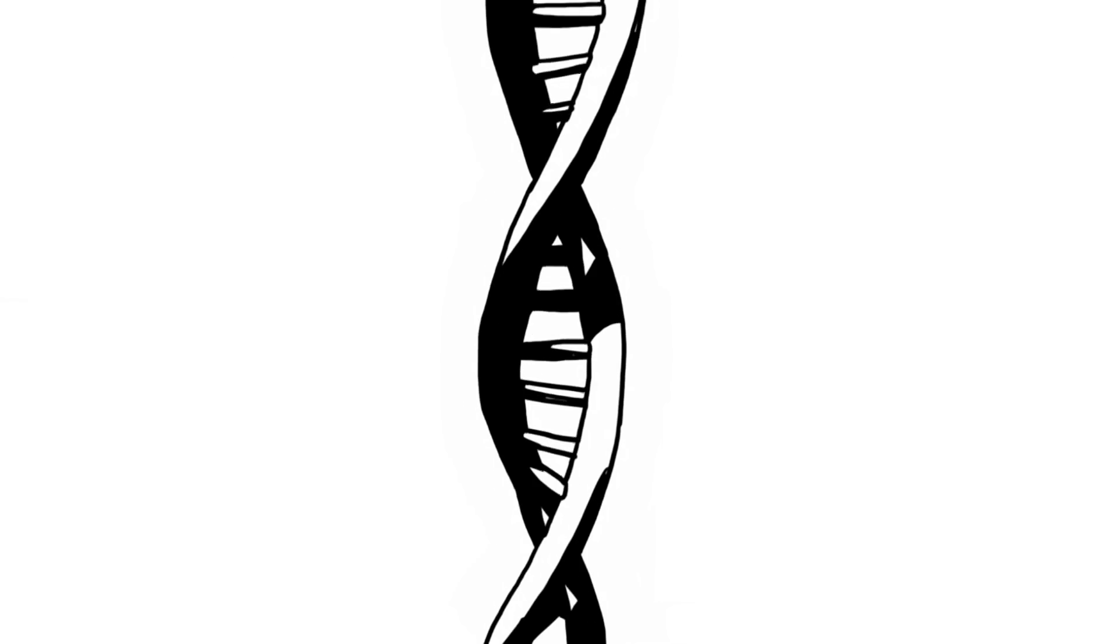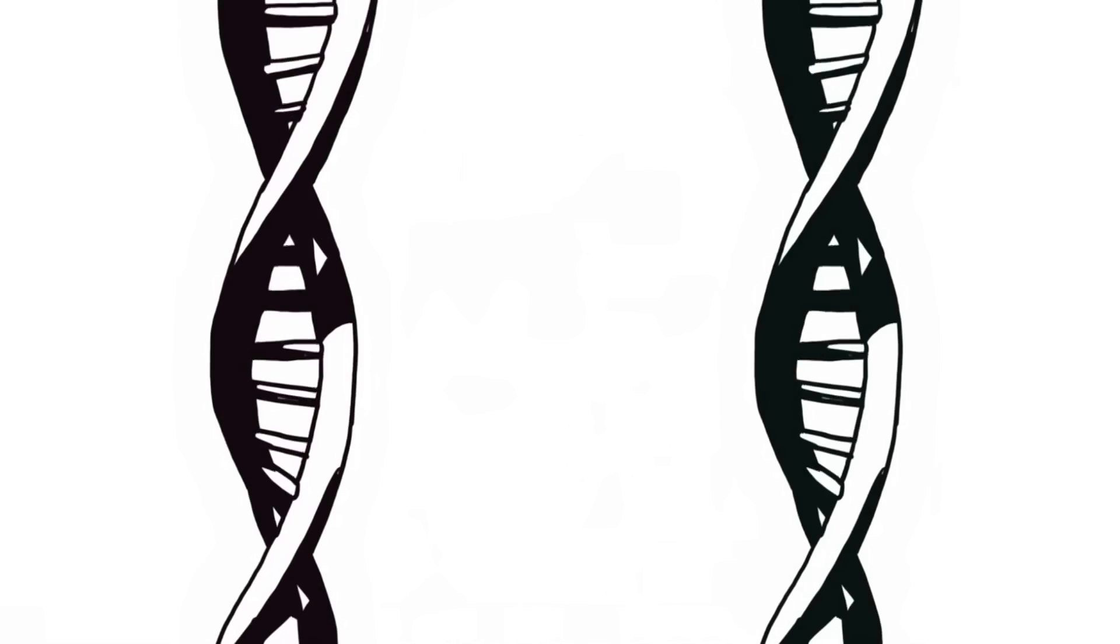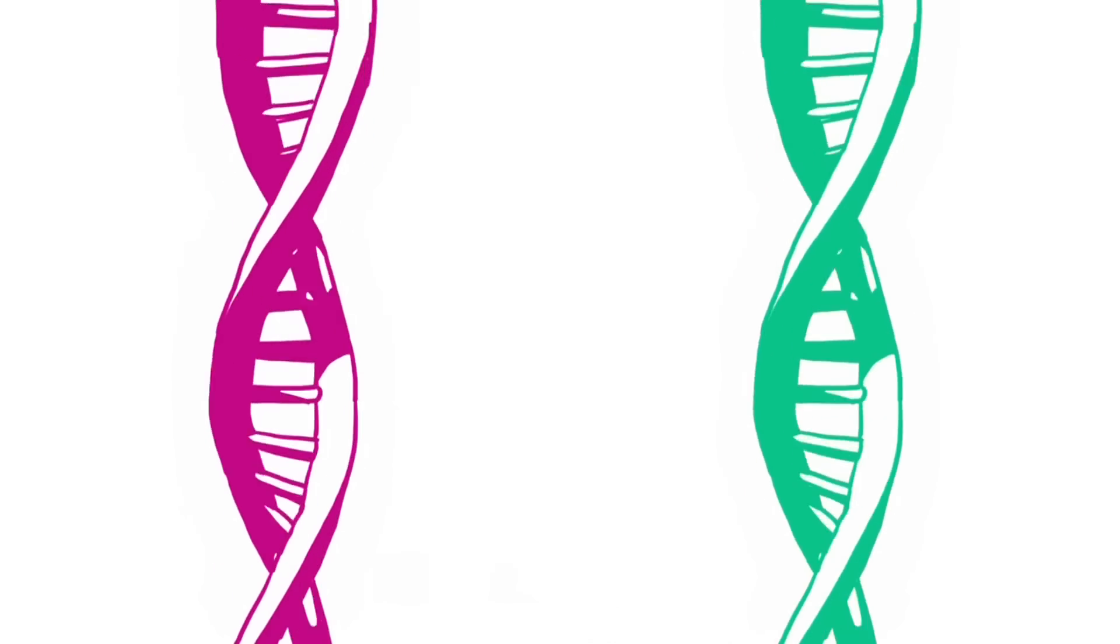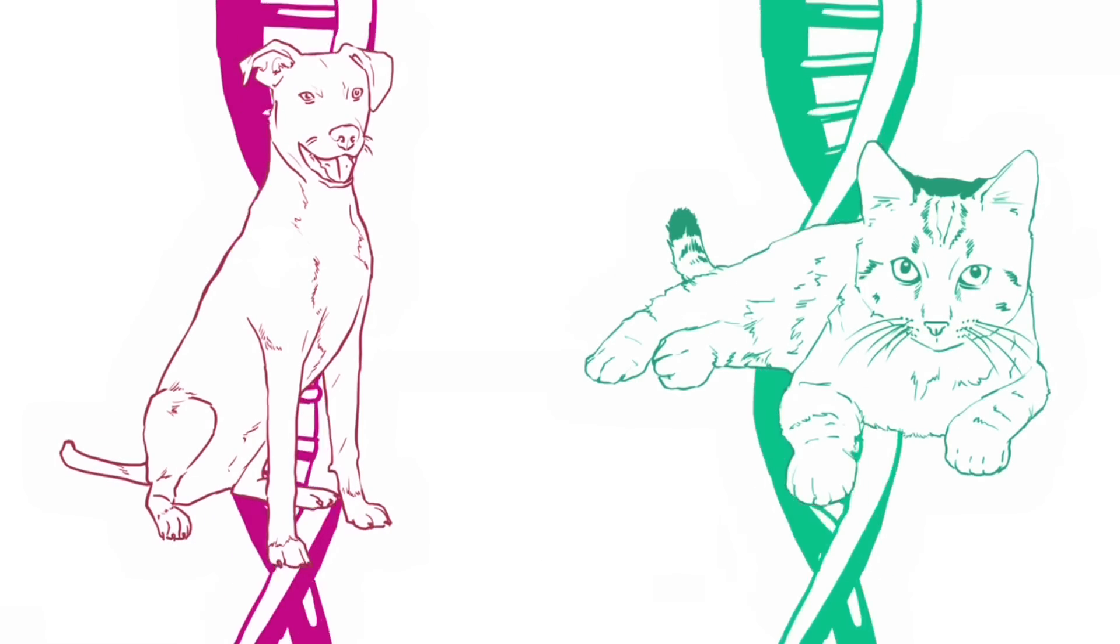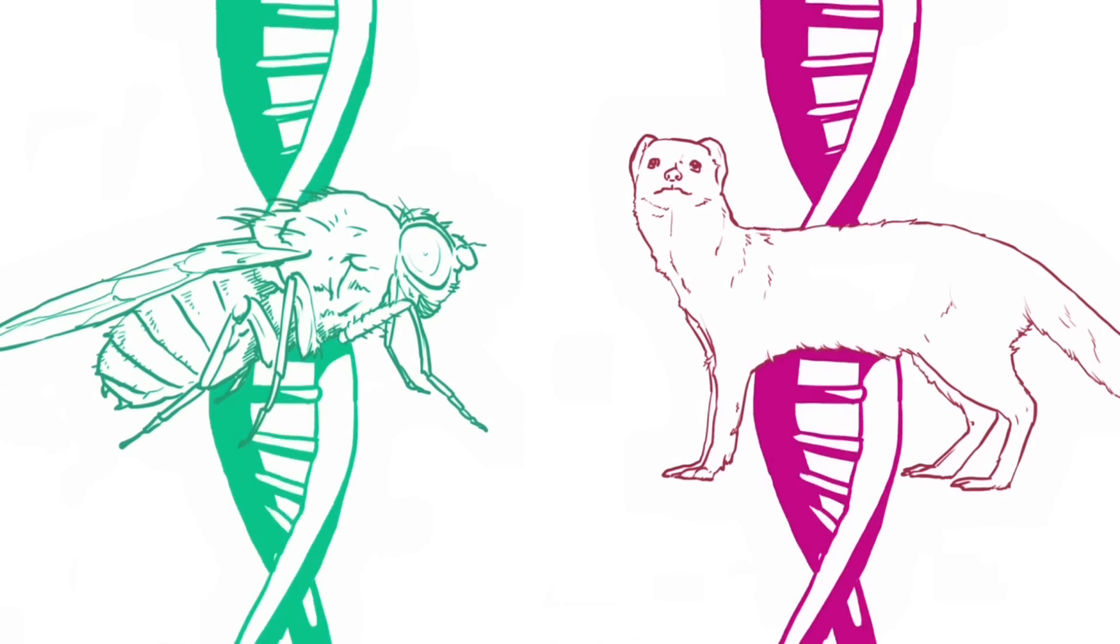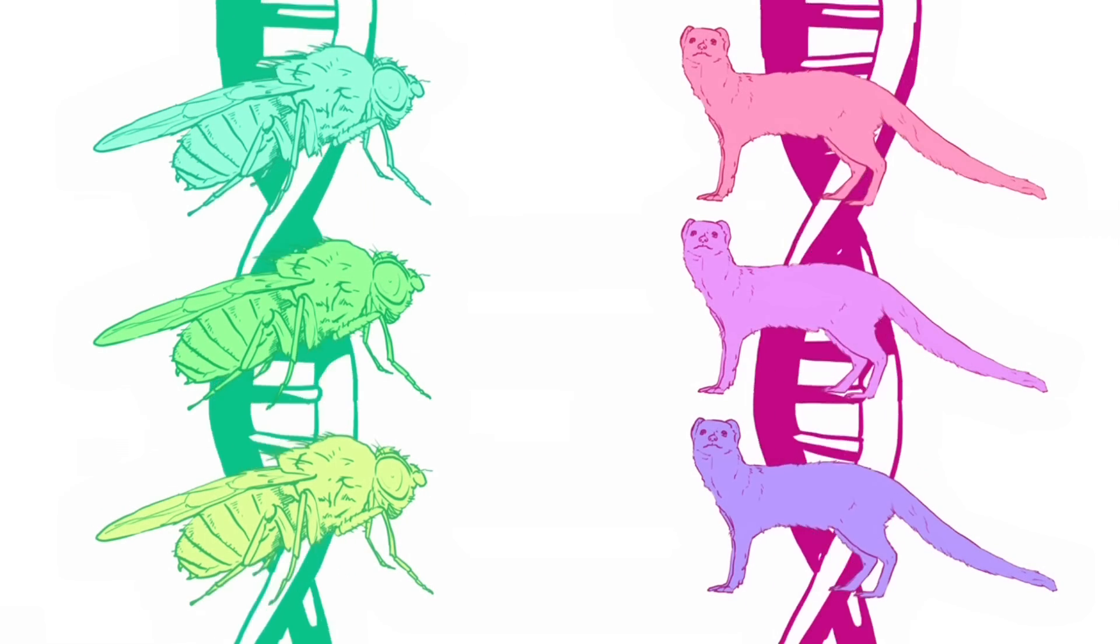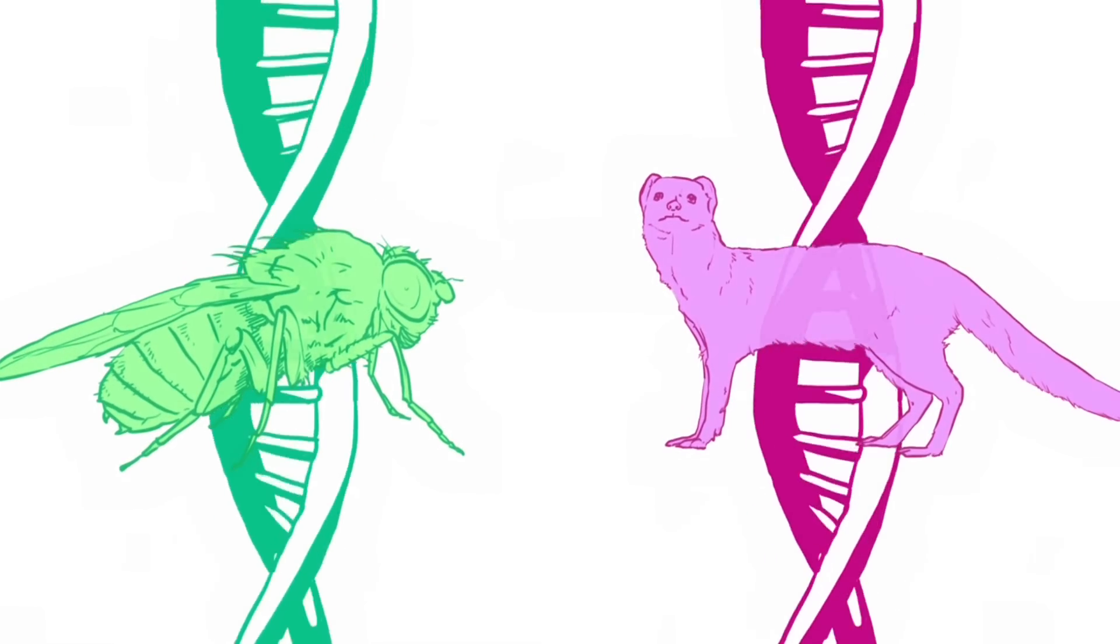In genetics, biological kinds are differentiated when there is an unbridgeable genetic division between them. Think cats and dogs. Think mongoose and fruit fly. There is genetic variation within each species, but much larger variation between them.